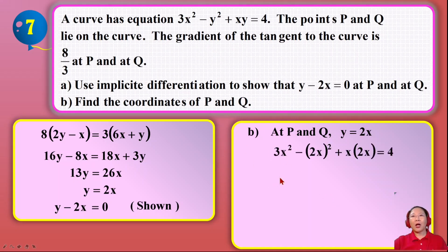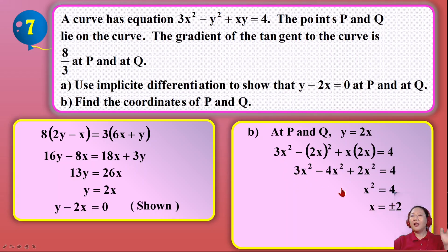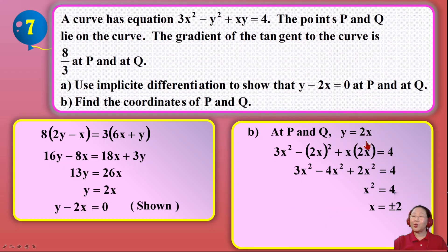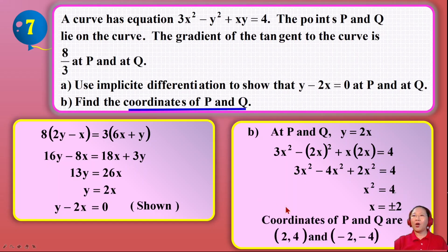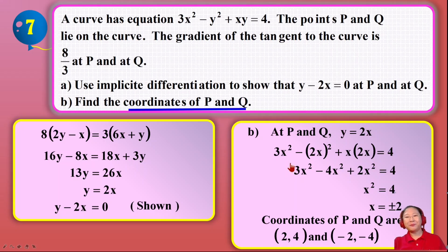We substitute y equals 2x into the original curve equation. That gives us the value of x after rearranging and factorising. Once we have x, we substitute back into y equals 2x to find y. This gives the coordinates of P and Q as (2, 4) and (−2, −4).